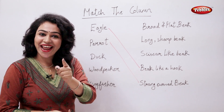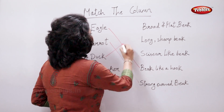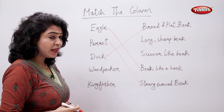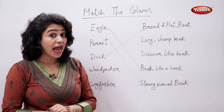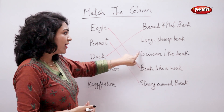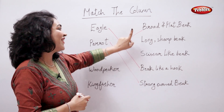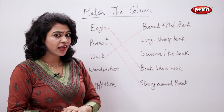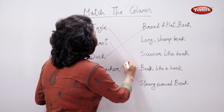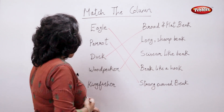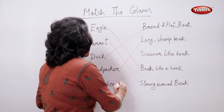Now tell me, woodpecker has a scissor-like beak? No, a long and sharp beak. And kingfisher has a scissor-like beak.